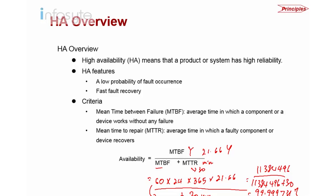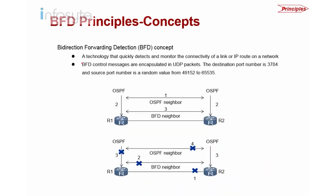Recovery must also be fast. We have a concept called BFD to reduce our MTTR. To reduce recovery time, we need fast detection — that is the function of BFD, or Bi-Directional Forwarding Detection. Only when you can detect a failure fast can you recover fast. BFD is a technology that quickly detects and monitors connectivity of a link or IP route on the network.